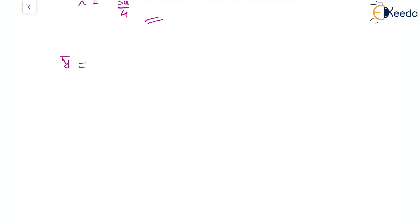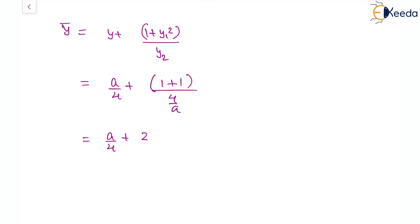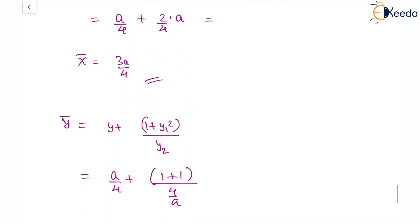For the y-coordinate of the center of curvature, the formula is ȳ = y + (1 + y1²)/y2. Substituting y = a/4, y1² = 1, y2 = 4/a: ȳ = a/4 + 2a/4 = 3a/4. So the center is (3a/4, 3a/4).